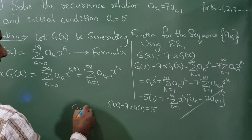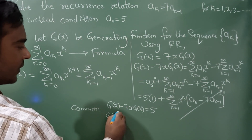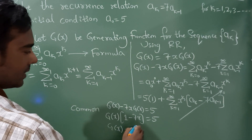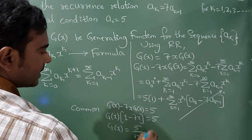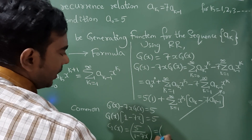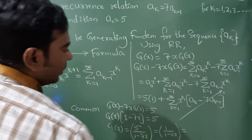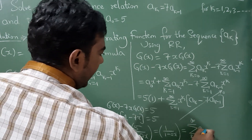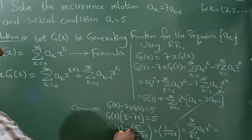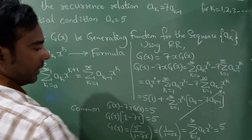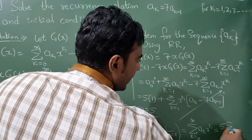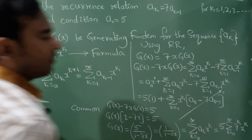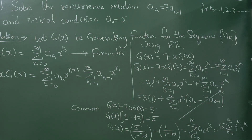Factoring out g(x): g(x)·(1 minus 7x) = 5, so g(x) = 5 divided by (1 minus 7x). Using the formula 1/(1 minus a·x) = summation k from 0 to infinity of a^k · x^k, the final answer is g(x) = 5 · summation k from 0 to infinity of 7^k · x^k.